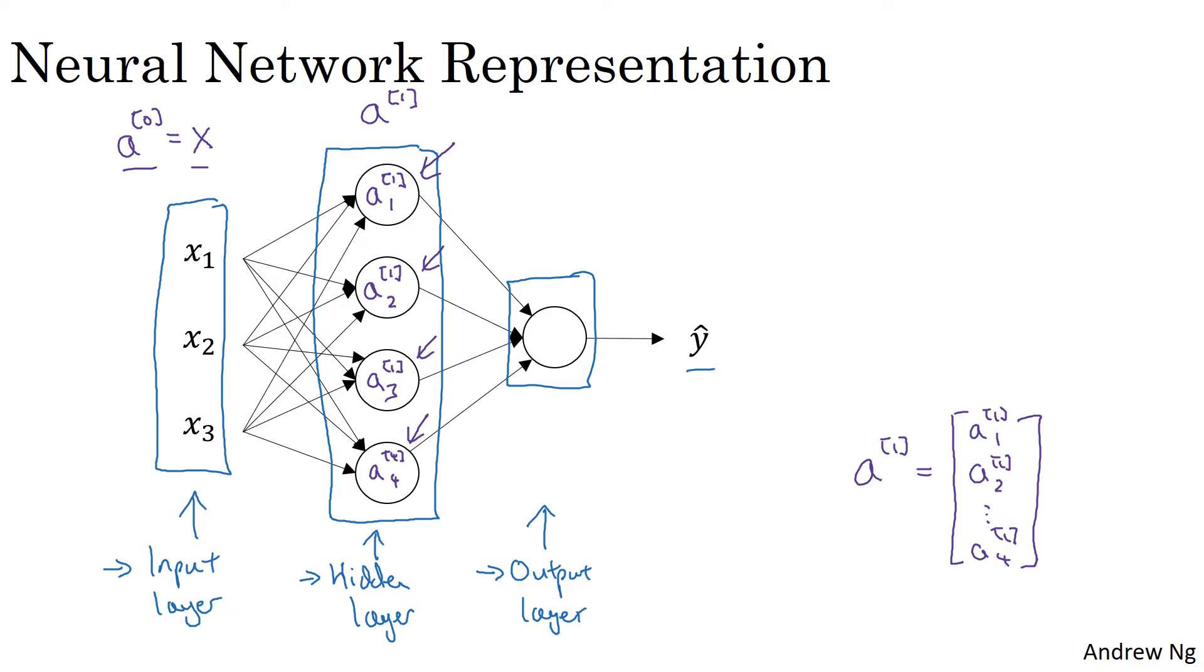Then finally, the output layer will generate some value, A2, which is just a real number. And so Y hat is going to take on the value of A2. So this is analogous to how in logistic regression, we have Y hat equals A. And in logistic regression, we only had that one output layer. So we didn't use the superscript square brackets.